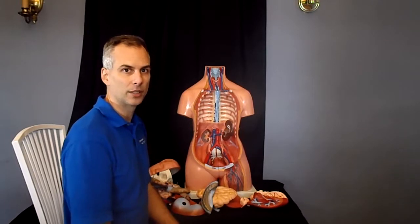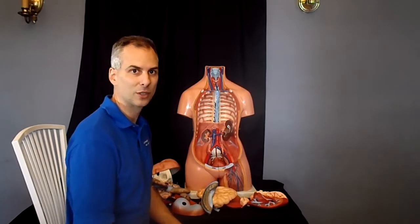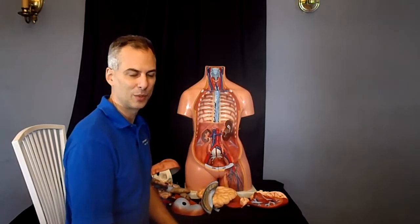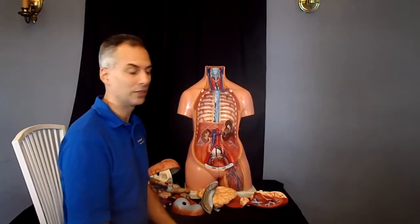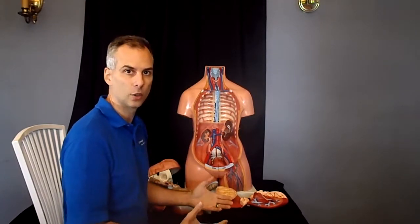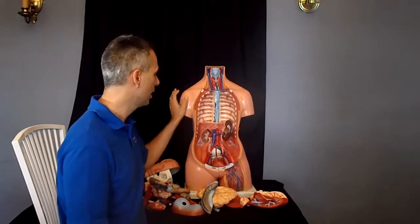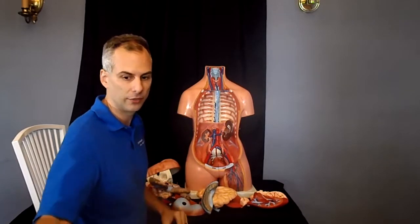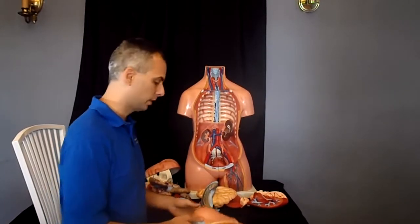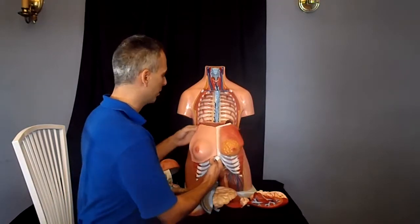This is the video where we talk about some of the gender-specific materials, so if you've got the kids out of the room, we can start talking about the male and female components of this model, which has a total of 39 removable parts plus the torso itself. So the first gender-specific material that we have for this is a female breastplate.